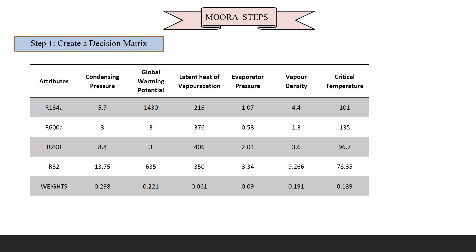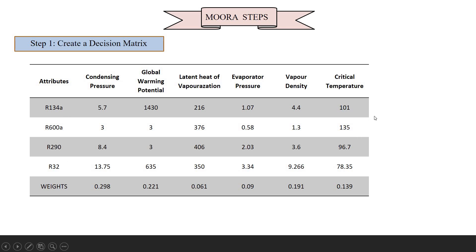Using these six attributes, this matrix was constructed and weights were found by taking the attribute values from the decision matrix and dividing by the sum of the respective columns. Likewise, we obtained the weights for all four refrigerant alternatives and for all properties of the refrigerant.